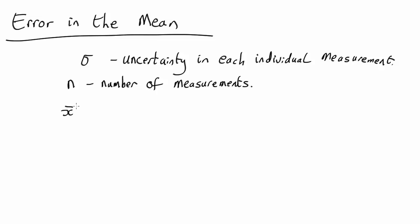Now, the uncertainty in the average—so σ_x is the uncertainty in one measurement x, so σ_x̄ is the uncertainty in the average—will be much less than σ_x.